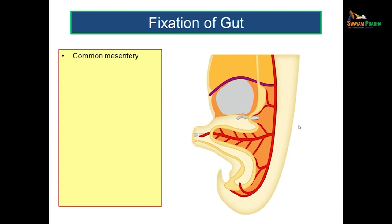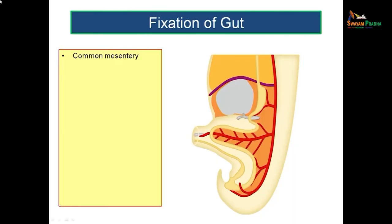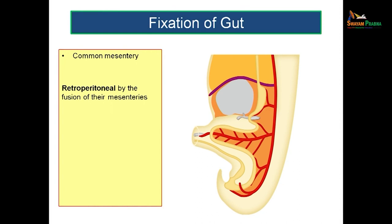Now we must discuss fixation of gut. Before understanding fixation, you need to know that the gut is suspended within the body cavity by a tissue known as the common mesentery. Later, some structures will become retroperitoneal — meaning they will lie behind the peritoneum, against the posterior abdominal wall, just covered by peritoneum and no longer suspended by it. This happens by a process known as fusion of the mesentery.